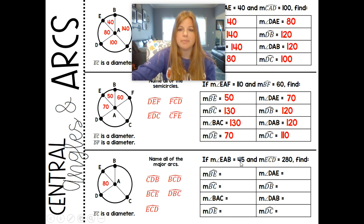If the measure of angle EAB is 45, and the measure of angle ECD is 280, find the measure of BE. So if EAB is equal to 45, then our BE is also 45. If I want to find BC, well let's see EB is 45. This is a diameter, so I know all of this adds up to 180. 180 minus 45 would give us 135. Then the central angle of BAC would also be 135.